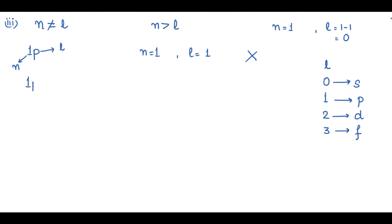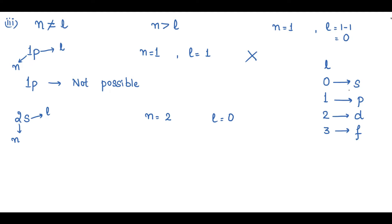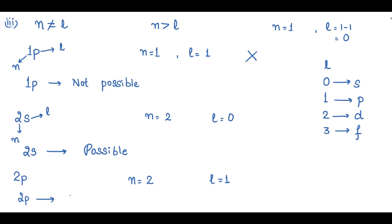The next orbital is 2s. Here n equals 2 and s corresponds to l equal to 0. Since l is less than n, the 2s orbital is possible. The next one is 2p: n equals 2 and p corresponds to l equal to 1. Since 1 is less than 2, the 2p orbital is also possible.